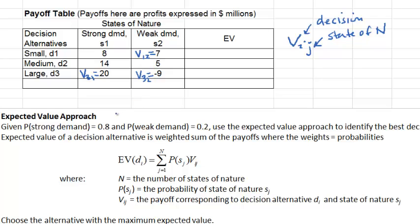Now, if you knew that there would be strong demand for the condos, you would build a large complex because it gives you the highest possible payoff. If you knew that there would be weak demand, then you would build a small complex because that gives you the highest possible payoff in the weak demand column. The catch is we don't know the demand level until we have already made the decision. Perhaps the decision can depend on your attitude toward risk. If you are an optimist and don't mind taking risks in hopes of a large return, you might build a large complex because of this large value of 20 million. If you are risk averse, you might build a small complex since in the worst case scenario — the weak demand case — it gives you the highest possible payoff. Or you might think about averaging the two possible payoffs for each alternative and then compare those averages to make the decision.